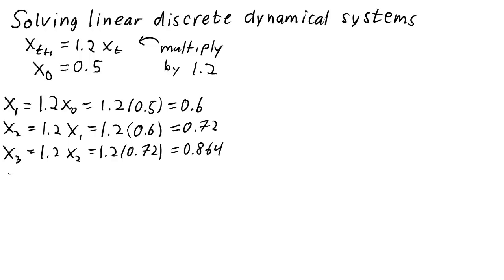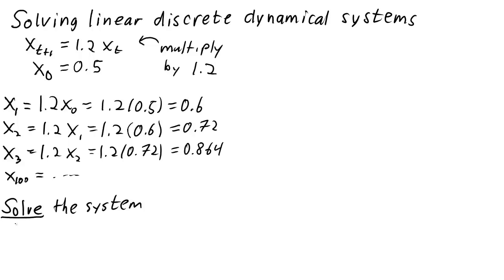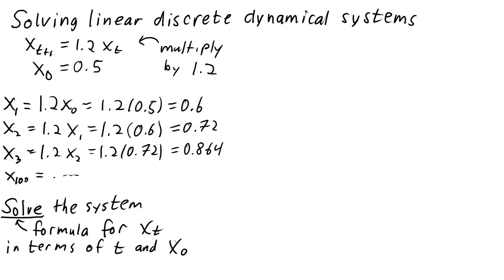We could do this indefinitely. We could calculate x sub 100 with this process, but it would take a while. For a system as simple as x sub t plus 1 equals 1.2 times x sub t, though, there is another way to figure out what x sub t will be for any value of t. We can actually solve this system to give us a direct formula to calculate x sub t directly — find a formula for x sub t in terms of the time step t and the initial condition x0, which cannot depend on the value of x from the previous time step.